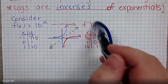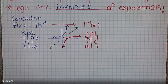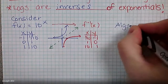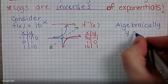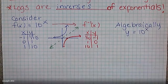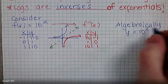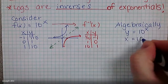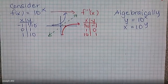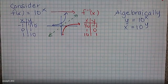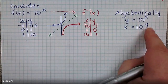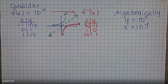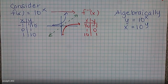I want to talk about what the equation for this inverse looks like algebraically. If you have Y equals 10 to the X power, we find the inverse by switching X and Y values, giving us X equals 10 to the Y. At this point, we have to introduce an important concept: how do I solve for Y? Y is a variable up in the exponent, so we're going to take what's called the log of both sides.